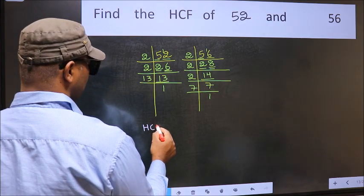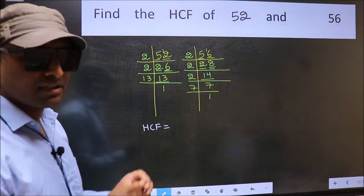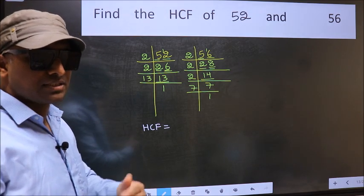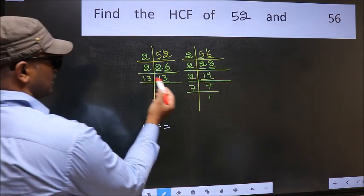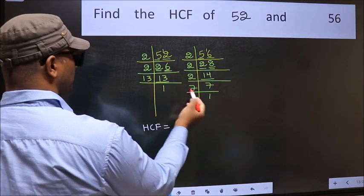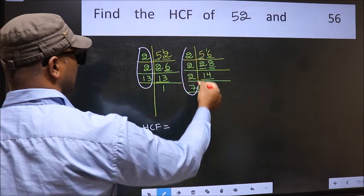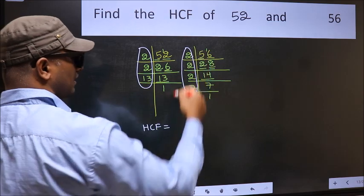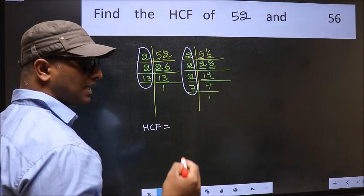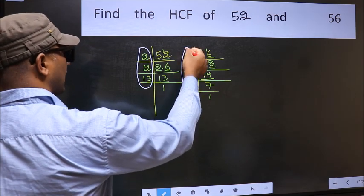Therefore, our HCF is, HCF is the product of the numbers which should be present in these 2 places. That is here and also here. Here and here.